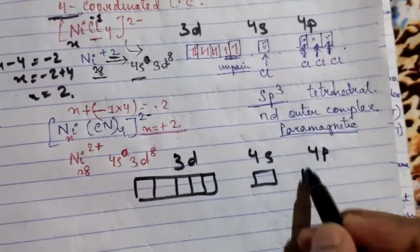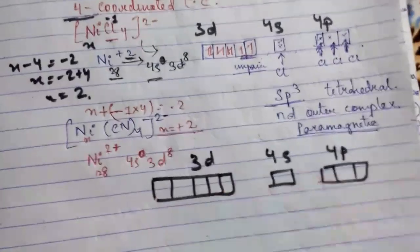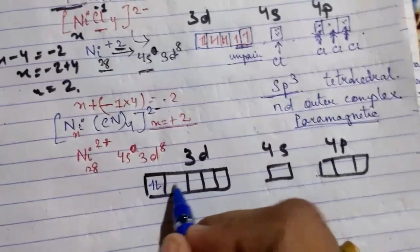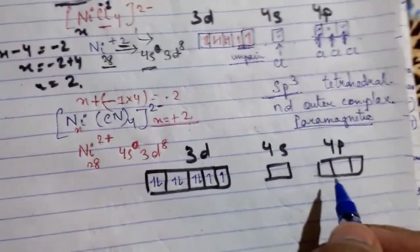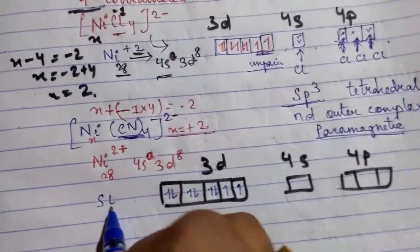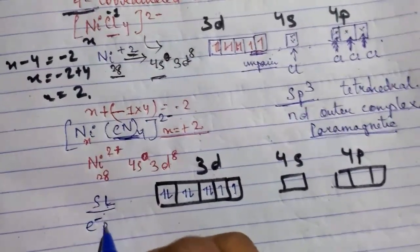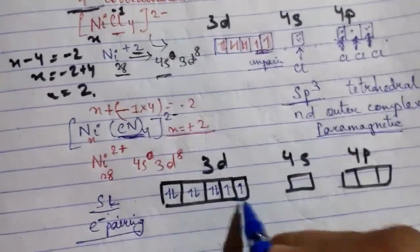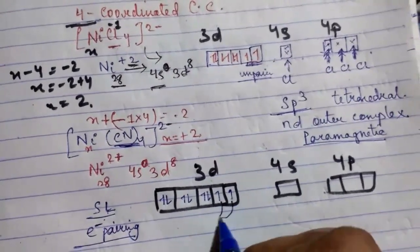Now for Ni(CN)₄: the orbitals are 4p, 4s, and 4p. In 3d there are 8 electrons: 1, 2, 3, 4, 5, 6, 7, 8. CN is a strong ligand. With a strong ligand, we have electron pairing, so this electron will pair and this electron will pair.